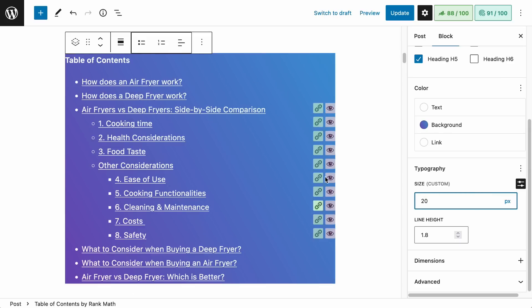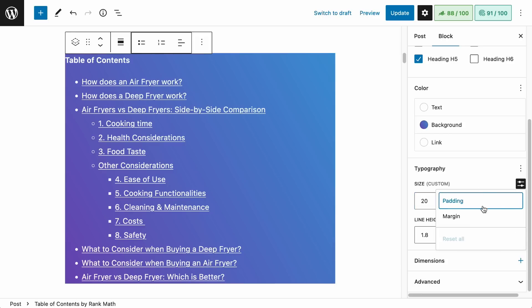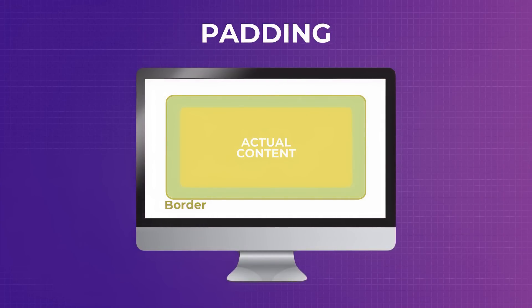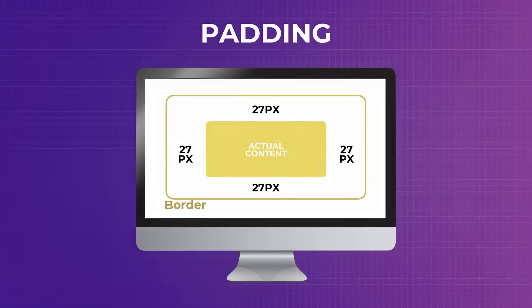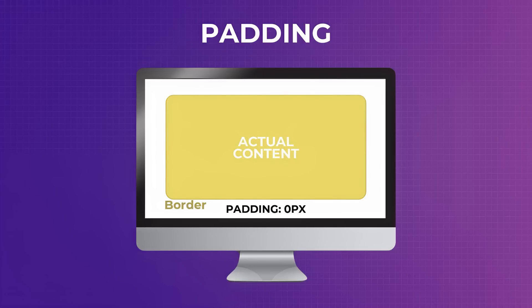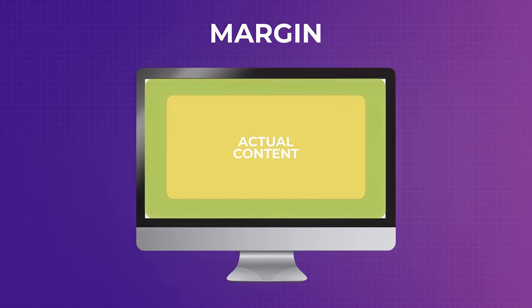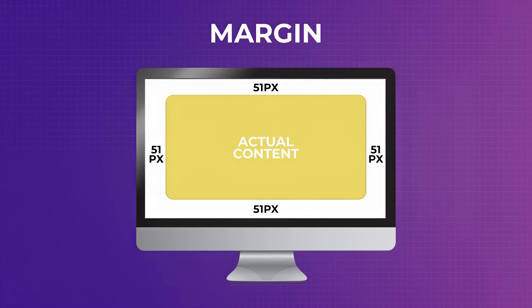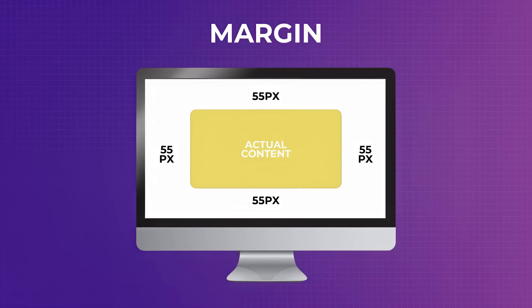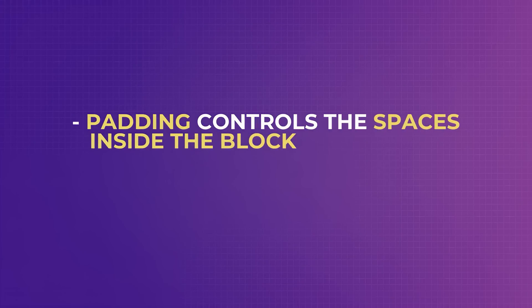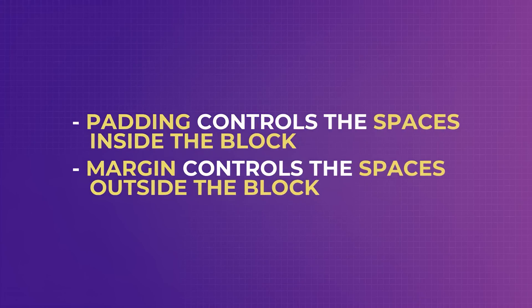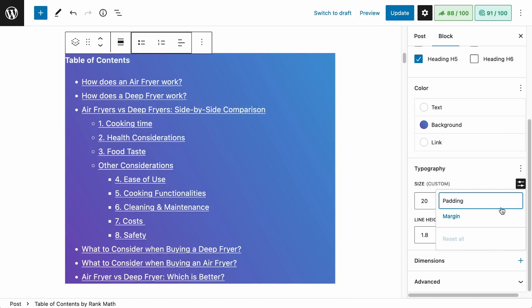You can adjust the spacing around the table of contents block by expanding the dimensions section, where you'll see padding and margin settings. Padding controls the spaces between the border and the actual content of your block — if you increase it, the content will be pushed in; at zero, the content will be near the border. Margin controls the spaces outside of the block — if you add margin, the entire block will be squeezed in. So padding controls the spaces inside the block, and margin controls the spaces outside.